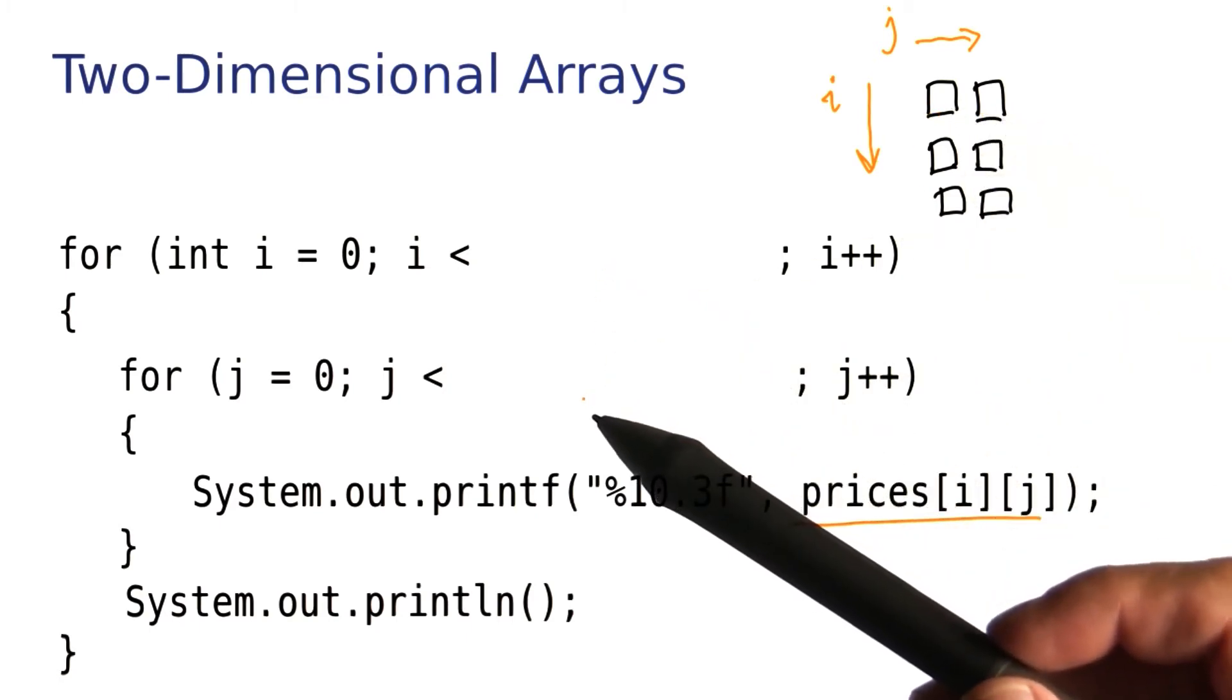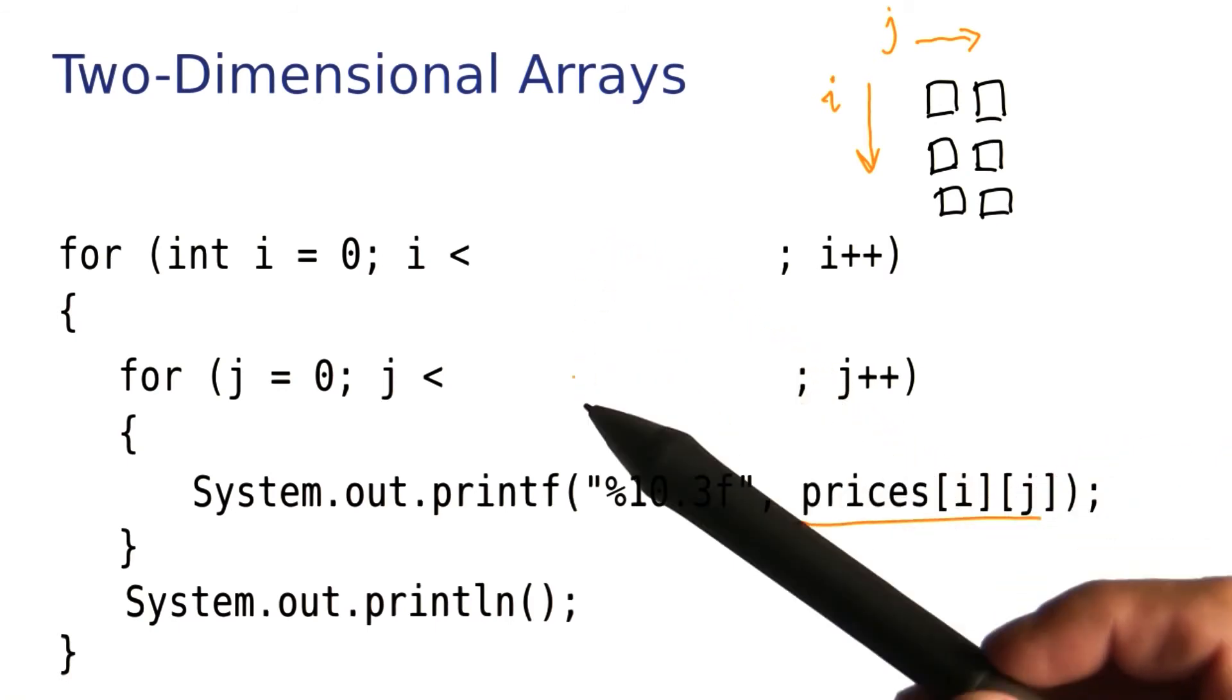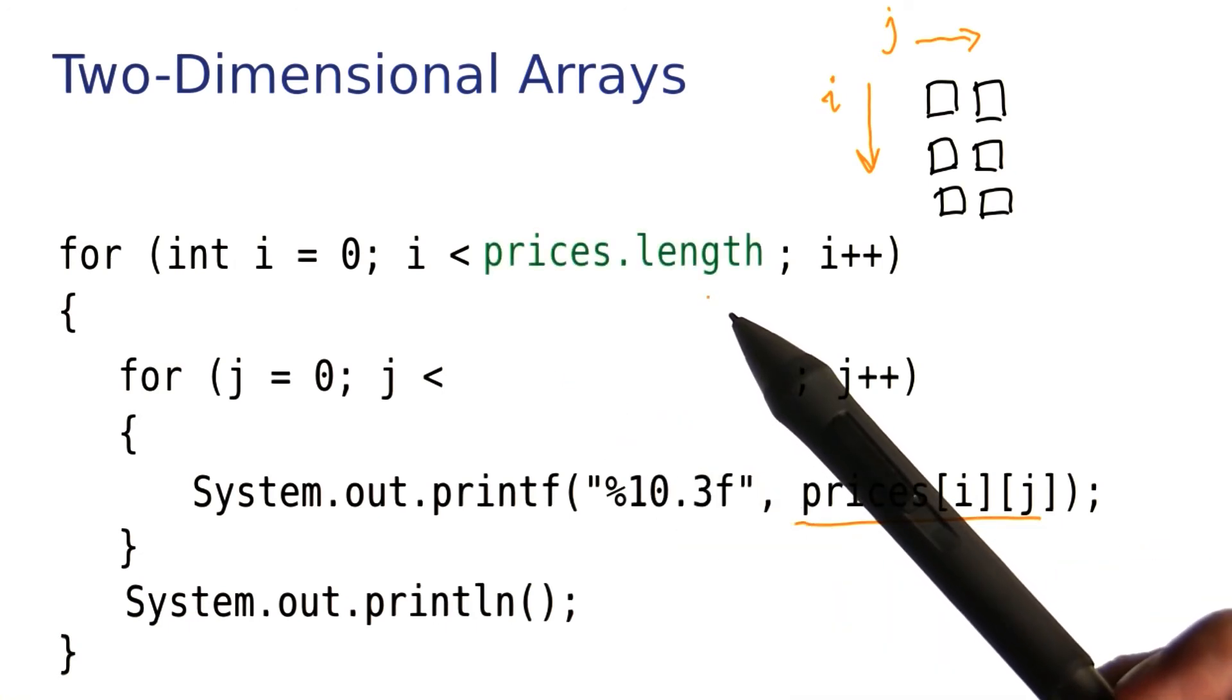Now, let's look at the missing bounds here. Of course, in this simple example, I could just say i should be less than 3, j should be less than 2, but in general, someone might just hand you a two-dimensional array, and you should ask it how big it is. Just like with a one-dimensional array, you just use the length field to find out how big an array is.